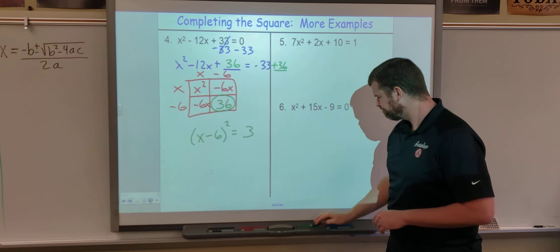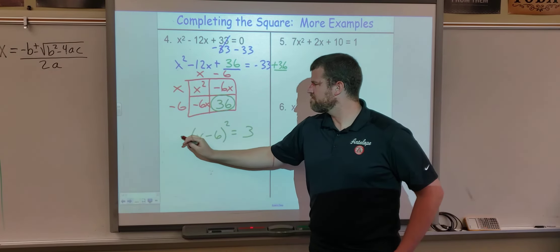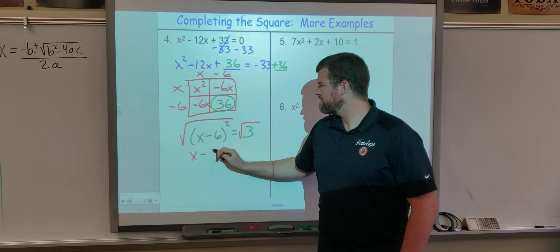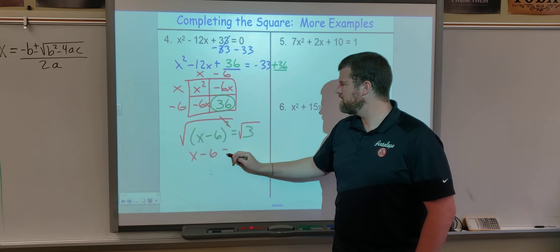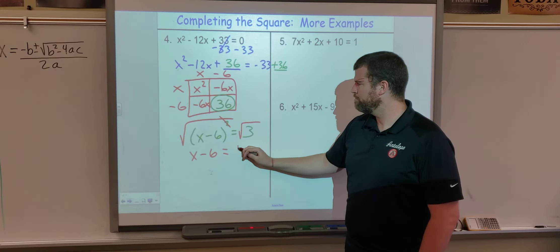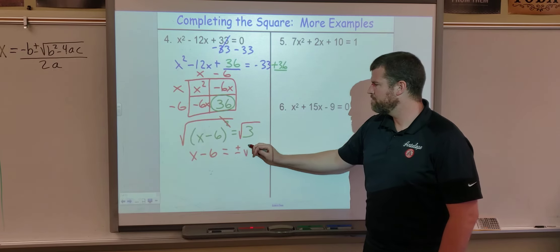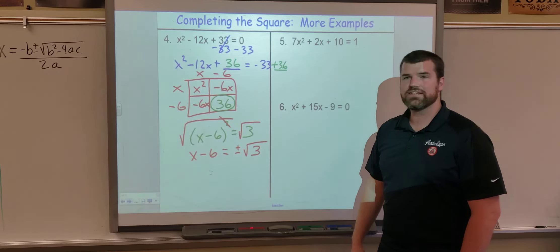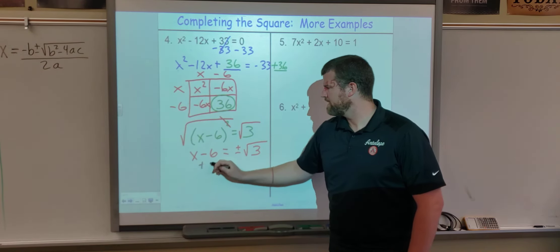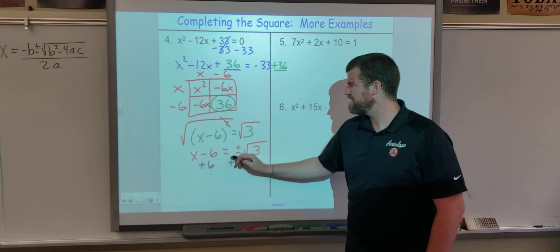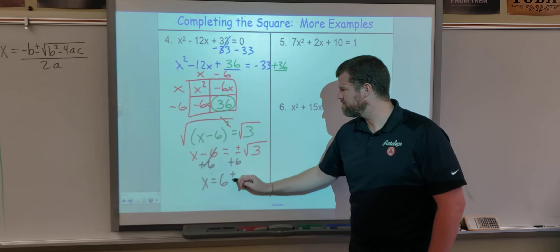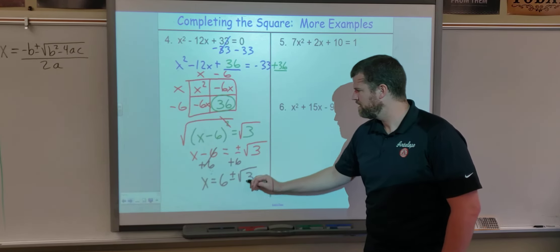Since the right side is positive, we will be able to get solutions. We take the square root of both sides: x minus 6 equals plus or minus √3. We leave it as √3, and then to get x by itself we add 6 to both sides, giving us x = 6 ± √3.